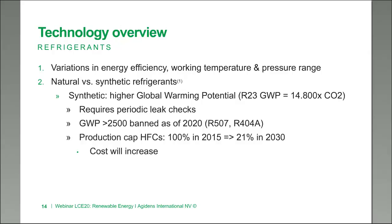All gases with a global warming potential above 2,500 have been banned as of 2020 — we're thinking about R507 and R404A for instance. Even the ones not yet banned — all those containing HFCs — will see significant production caps over the coming years. 2015 has been set as the baseline, and production will be reduced by 79% to just 21% of 2015 levels by 2030. That clearly means that HFC-containing gases will become more and more expensive as supply diminishes.